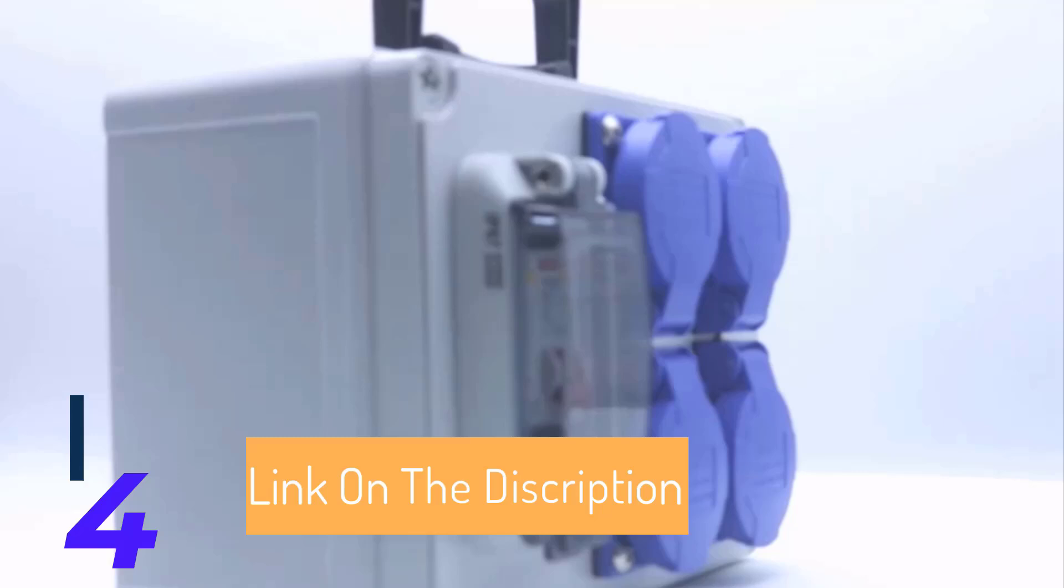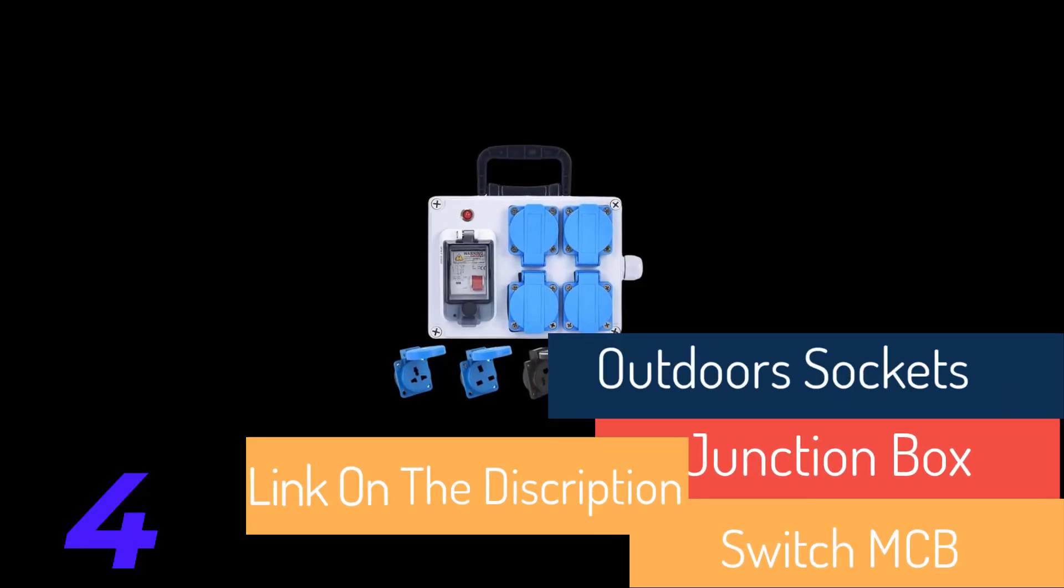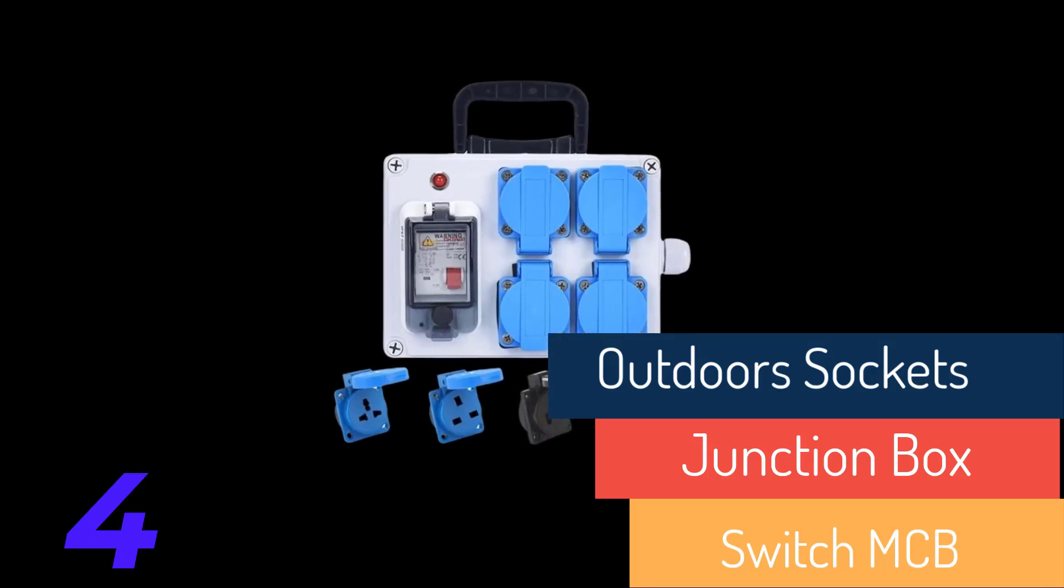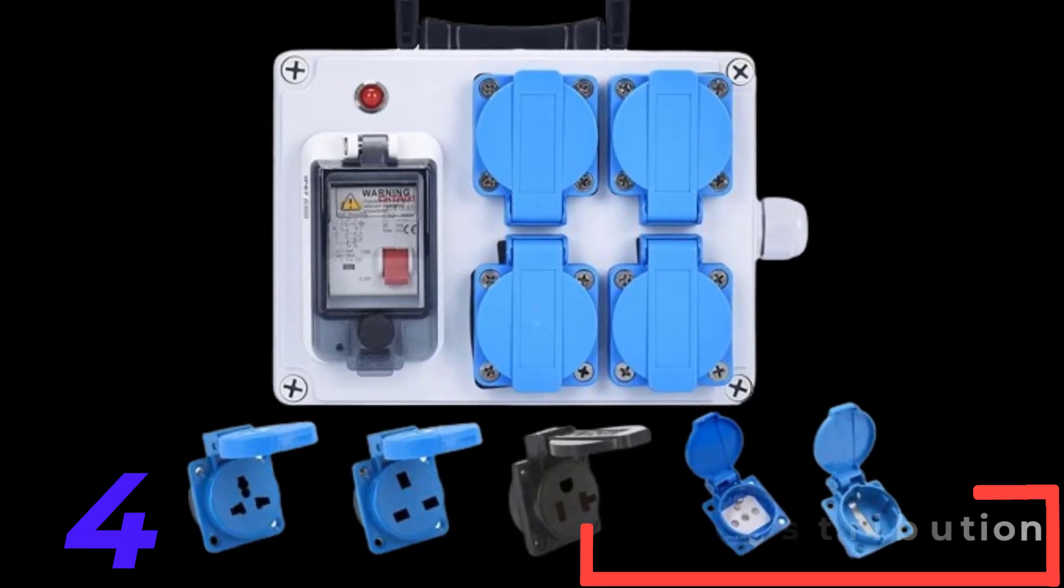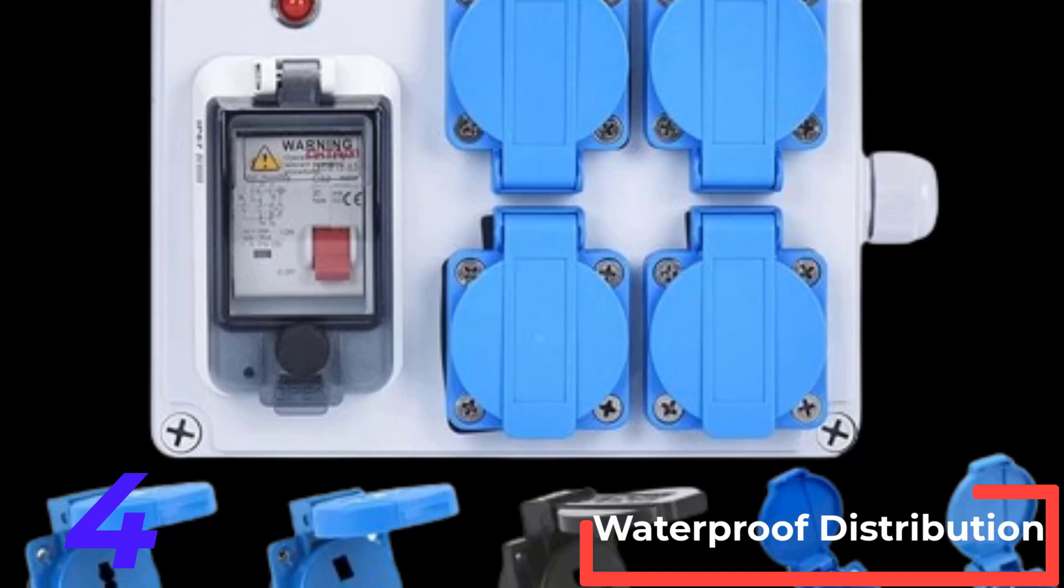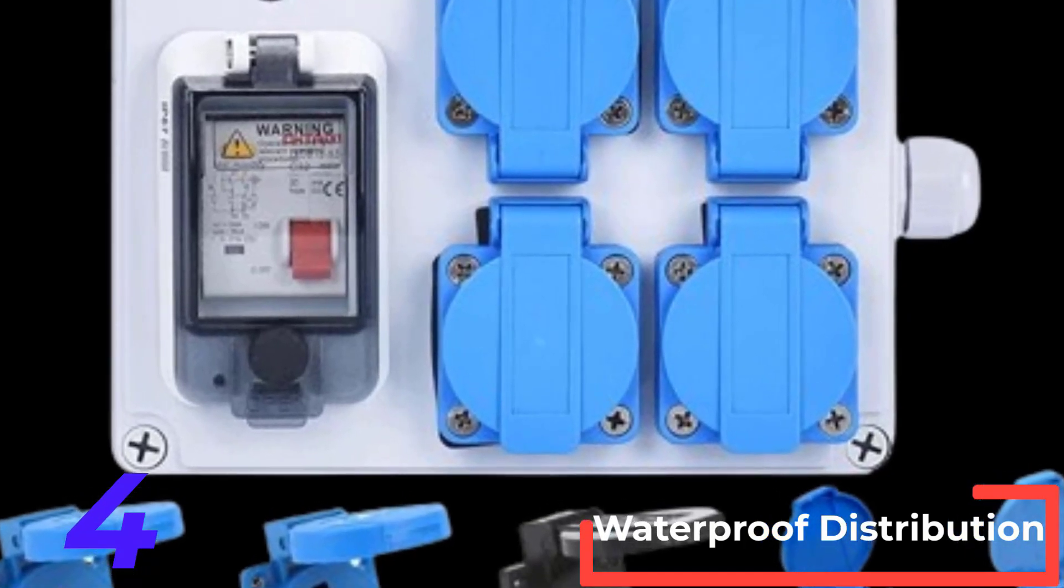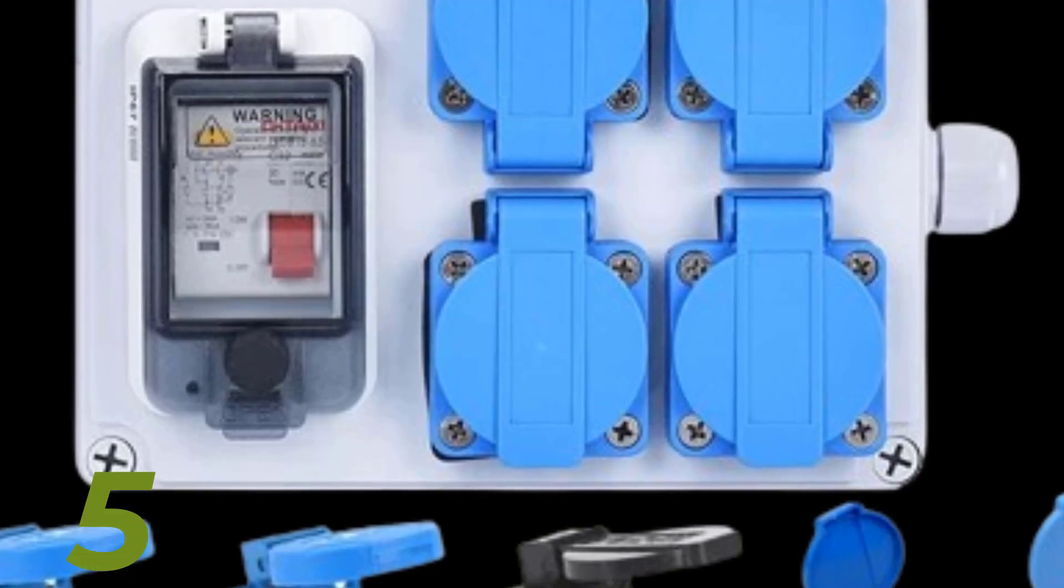AU equals AU socket. FR equals FR socket. 16A/20A with 2.5mm square 3 core cable with plug. 32A/50A with 4mm square 3 core cable no plug. Wall mount electrical enclosure, wall switch junction box, MCB distribution box, electric switch boxes, wall box for DIN.